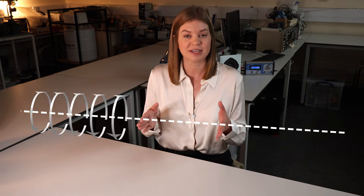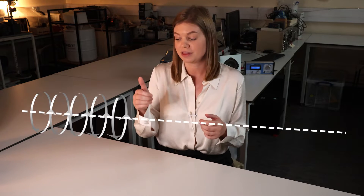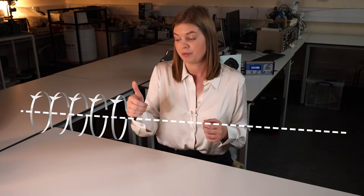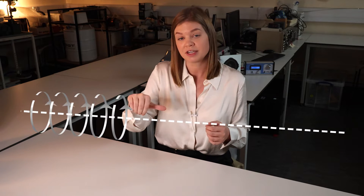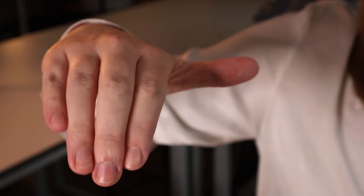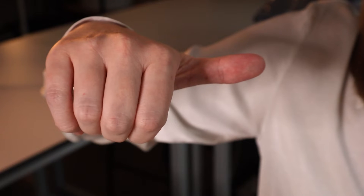We can determine directionality using the right hand grip rule — if we point our thumb in the direction of current flow, our fingers curl in the direction of the magnetic field. Now if we take that wire and wrap it into a coil, a magnetic field will still be induced, but this time it will be strongest inside the coil.